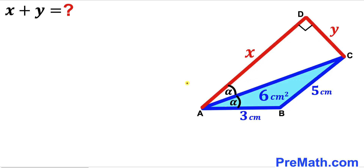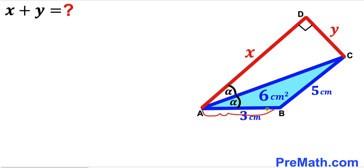Let's get started. First, let's focus on the blue shaded triangle ABC. We can see the area is 6 and the base is 3. We're going to think outside the box and draw some auxiliary lines.